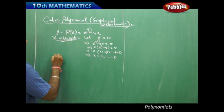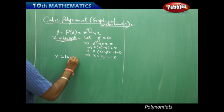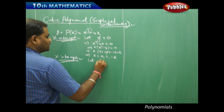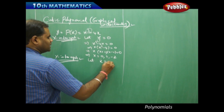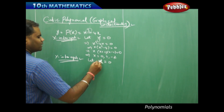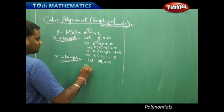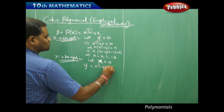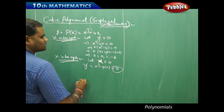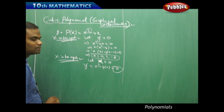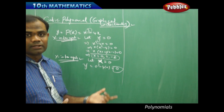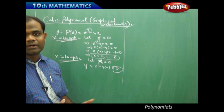Coming to the y-intercept, I find it by letting x equal to 0. Therefore, y will be 0 cubed minus 4 times 0, which is 0. So y equals 0 is my y-intercept. These are my x-intercepts and this is my y-intercept, which I obtain separately.